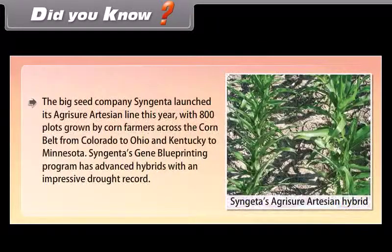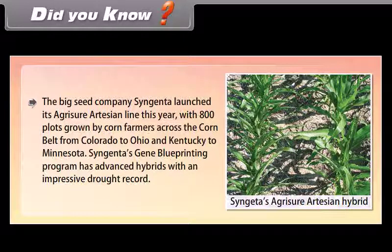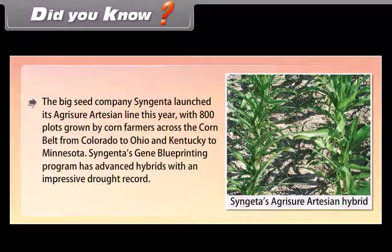Did you know? The big seed company Syngenta launched its Agritio artesian line with 800 plots grown by corn farmers across the corn belt from Colorado to Ohio and Kentucky to Minnesota. Syngenta's gene blueprinting program has advanced hybrids with an impressive drought record.